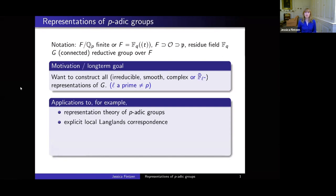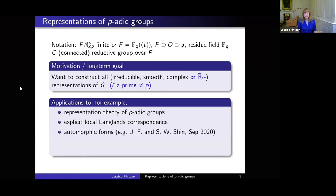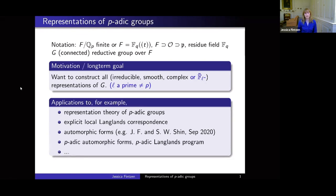Beyond the p-adic setting, if you want to write down an explicit local Langlands correspondence — attaching to every explicit representation of a p-adic group an explicit Langlands parameter — you need to know how to write them down explicitly. There are also applications to the global world, to automorphic forms and automorphic representations. For example, in joint work with Fintzen, we prove that almost arbitrary automorphic forms are congruent to automorphic forms that are supercuspidal at a prime, which has applications to the global Langlands correspondence.